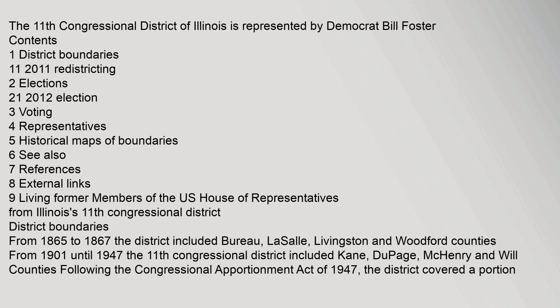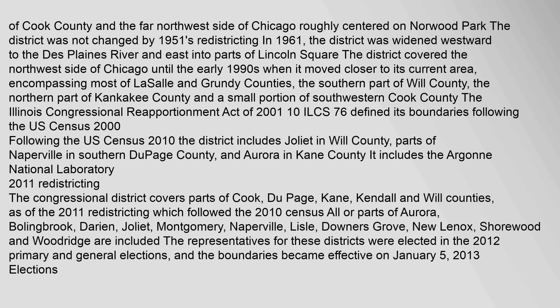The district covered a portion of Cook County and the far northwest side of Chicago, roughly centered on Norwood Park. The district was not changed by 1951's redistricting. In 1961, the district was widened westward to the Des Plaines River and east into parts of Lincoln Square. The district covered the northwest side of Chicago until the early 1990s, when it moved closer to its current area, encompassing most of LaSalle and Grundy counties, the southern part of Will County, the northern part of Kankakee County, and a small portion of southwestern Cook County.